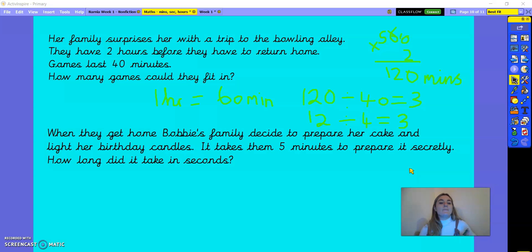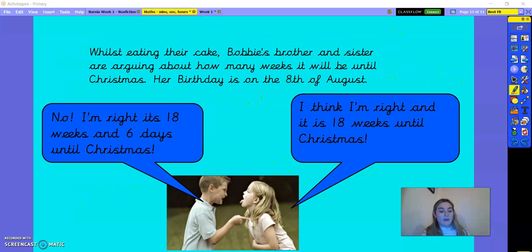So next question. When they get home, Bobby's family decide to prepare her cake and light her birthday candles. It takes them five minutes to prepare it secretly. How long did it take in seconds? Okay, so the answer to this one, you need to work out how many seconds there are in one minute. So we know that in one minute there are 60 seconds and five minutes have passed. So we need to do 60 times five. So to make it easier, I took off the zero from the 60 and did six times five. And I got 30. So I knew now, I know, I knew when I did 60 times five, I just needed to add a zero on at the end. So the answer to this one is 300 seconds. Okay, well done.